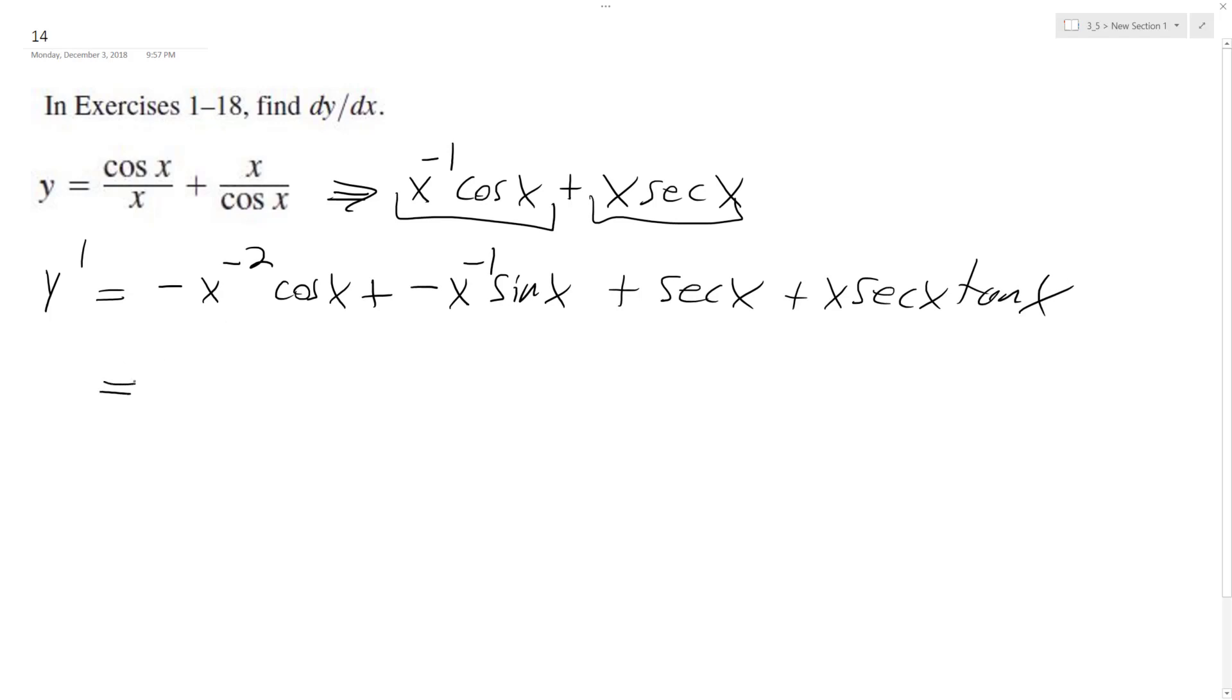Okay, so now, breaking things down, this is negative cosine x over x squared minus x, oops,